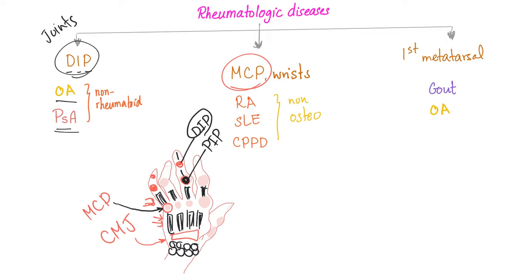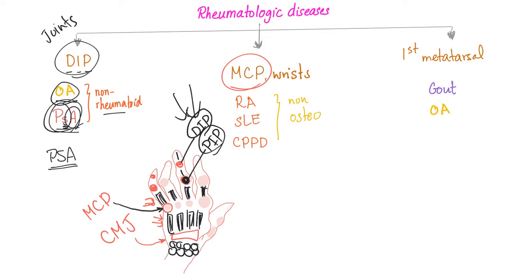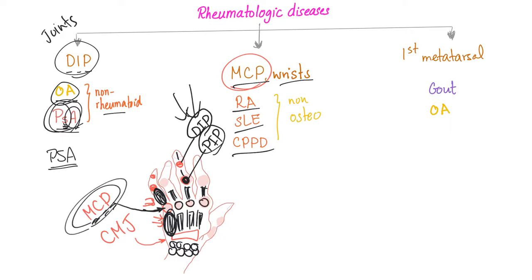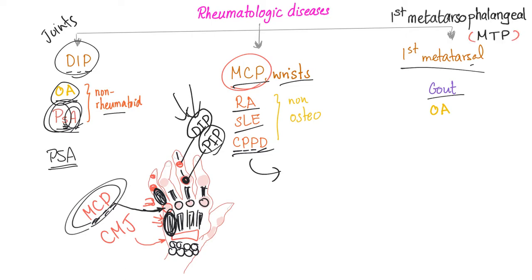Psoriatic arthritis here — that's PsA (small 's'), not PSA like prostate-specific antigen. So osteoarthritis and psoriatic arthritis involve the DIP. The MCP and wrist are involved in rheumatoid arthritis, lupus, and CPPD — calcium pyrophosphate dihydrate crystals, also known as pseudogout. The first metatarsal joint involves gout and osteoarthritis. So a layman says 'my big toe hurts,' but a doctor says 'you have inflammation in your first metatarsal joint, containing needle-shaped negatively birefringent crystals.'